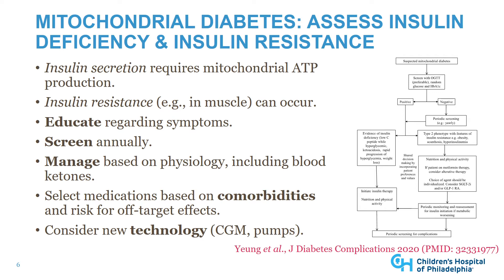We manage mitochondrial diabetes in an individualized way based on our understanding of each patient's physiology. We measure both blood sugar and blood ketones given the risk of diabetic ketoacidosis. We select medications based on physiology, comorbidities, and the risk for off-target effects. For individuals with clear evidence of insulin deficiency — such as ketoacidosis, low c-peptide, or weight loss with hyperglycemia — insulin is a cornerstone of therapy. For those in whom insulin resistance may predominate, newly available agents may be appropriate, though off-target effects must be carefully considered. Individuals with mitochondrial diabetes should also be offered the newest diabetes technology, including continuous glucose monitoring and subcutaneous insulin pump administration.